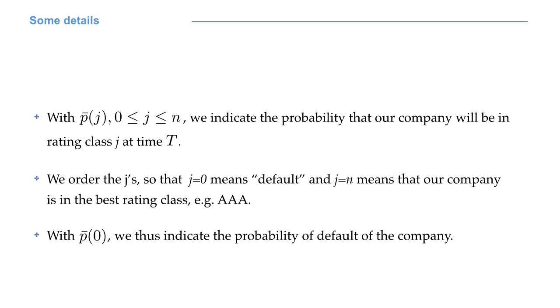With p bar j, we indicate the probability that our company will be in rating class j at time capital T. To simplify notation, we order the j's so that j equals zero means default, and j equals n means that our company is in the best rating class, for example AAA. This implies that we consider n rating classes including default. With p bar 0, we clearly denote the probability of default of the company at time capital T.